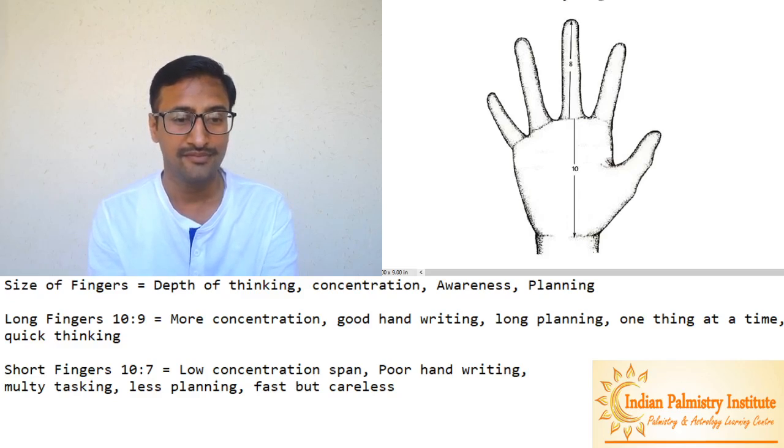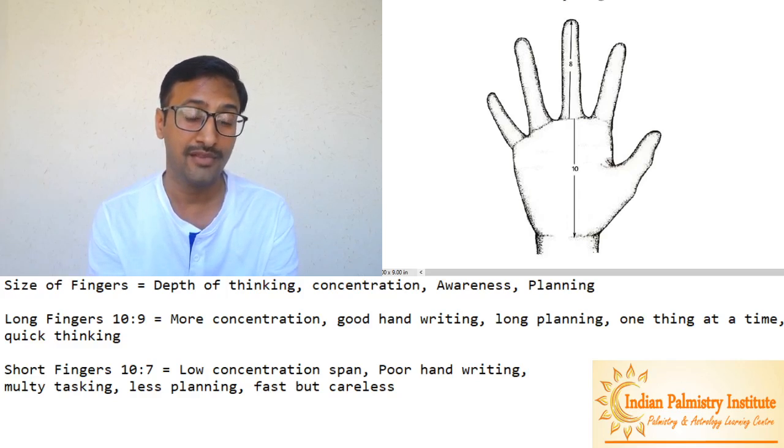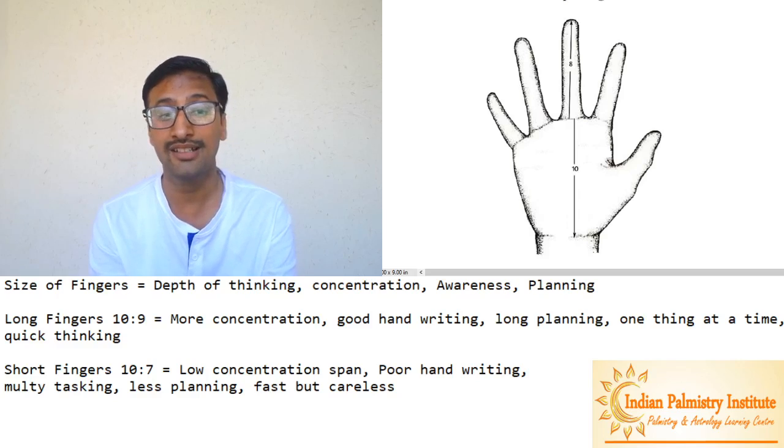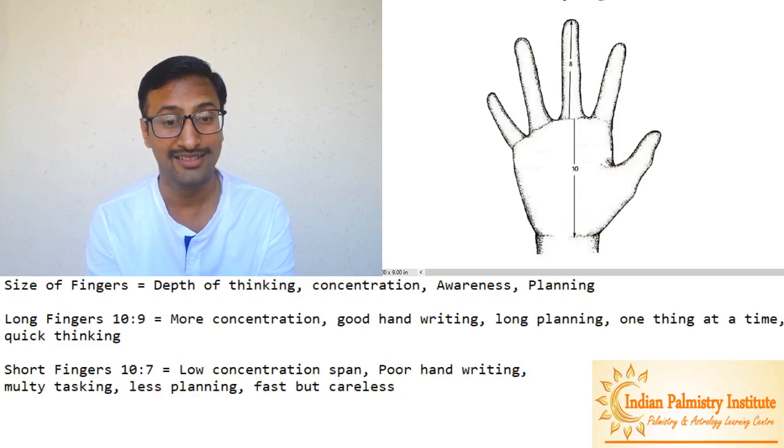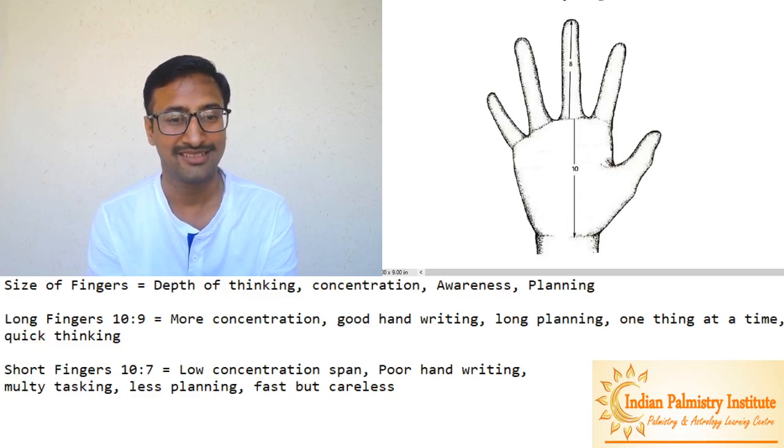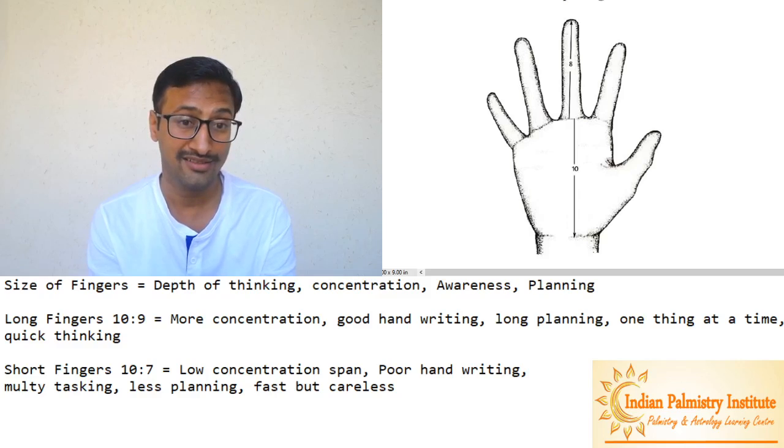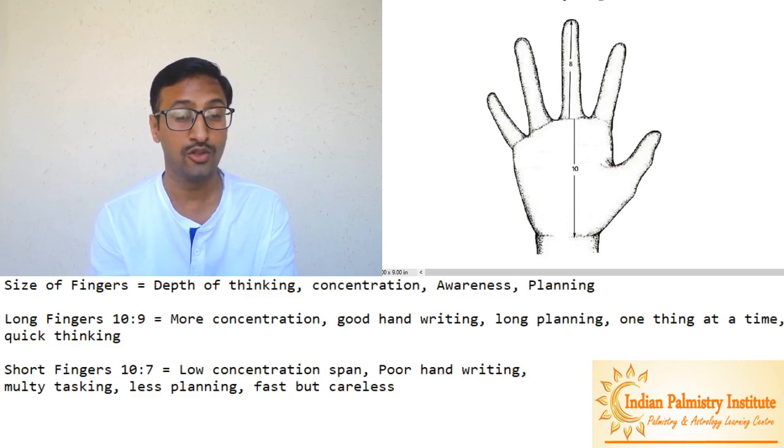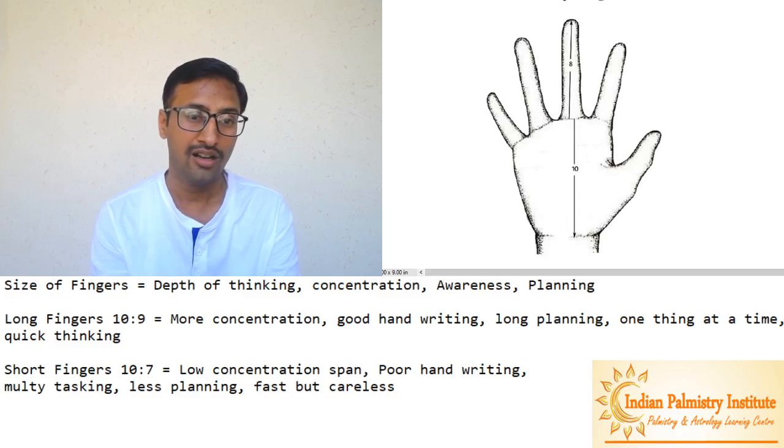Short finger people don't have too much plans. If you ask them what are you going to do next year, they will say I don't know, I'm not sure about next week, I haven't thought about it. They think for a small future. They can learn anything very fast but they forget it next day. Their mind is quick. Long finger people learn it slowly, they take time, they put their concentration into it. But once they learn something it will be for longer. Short finger people generally find it - I understood it, I learned it within five minutes but I'm not sure what it was.